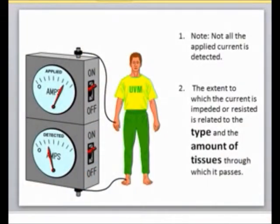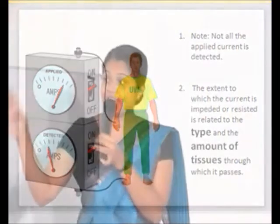This machine measures the electrical resistance of your body tissues. When a current is applied, not all of it passes through your body — only a very small fraction is detected. The extent to which the current is resisted depends on two factors: the type of tissues the current passes through, and the amount of those tissues.